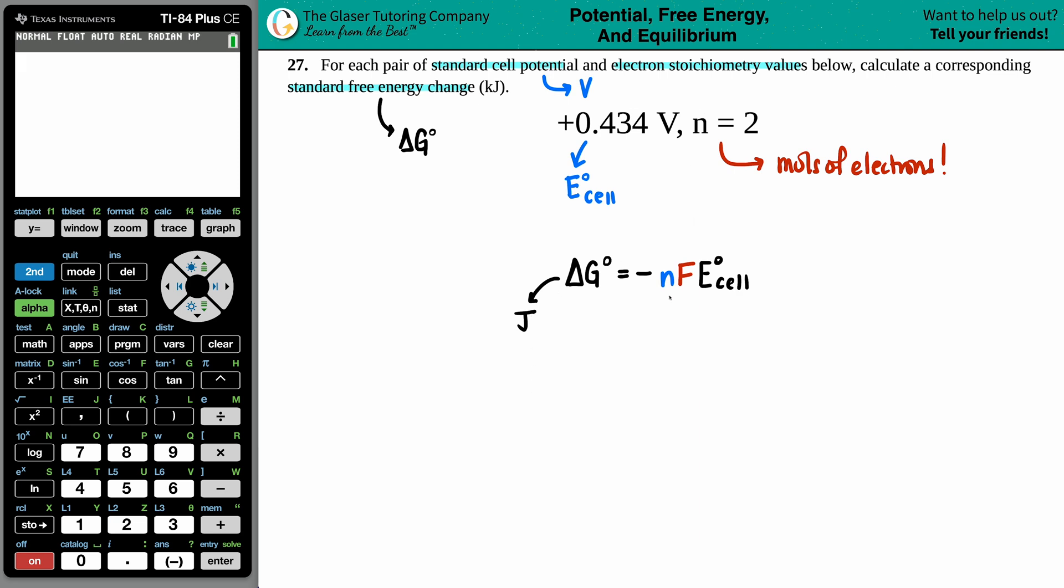But we have the n value, we know that that's two, two moles. We have the E-cell value, they did say that it was a positive 0.434 volts. But now the thing is, they didn't give me an F value.